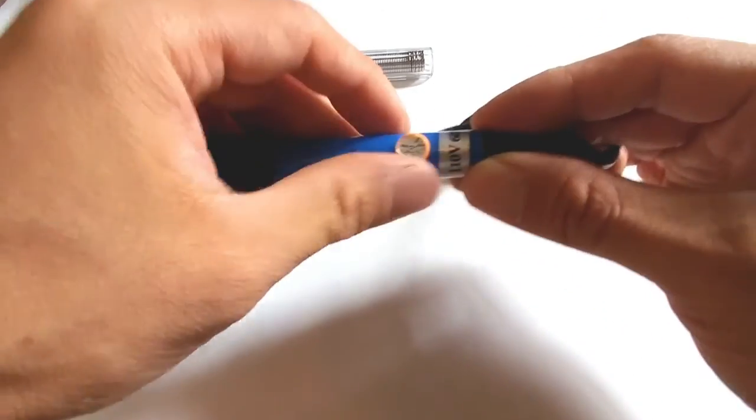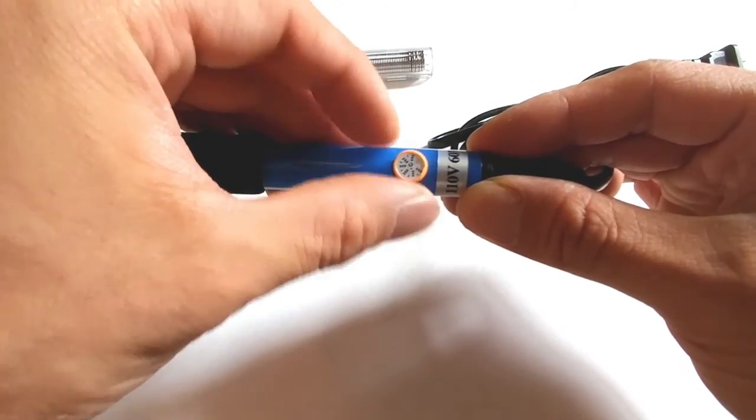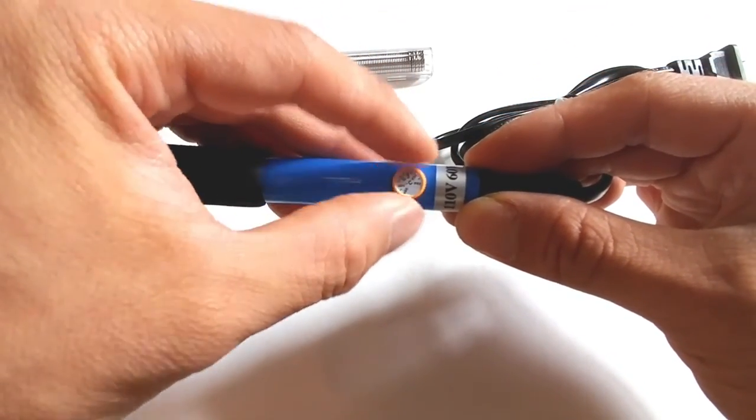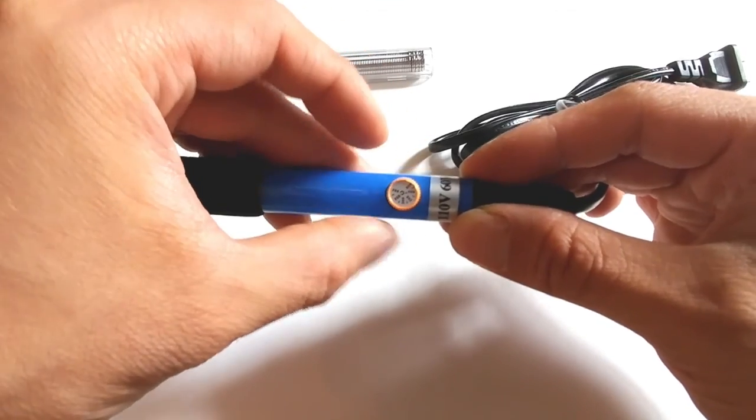At the end of the iron is a dial for adjusting the temperature of the tooltip from 200 to 450 degrees Celsius. This is useful if you work with different components and solders.